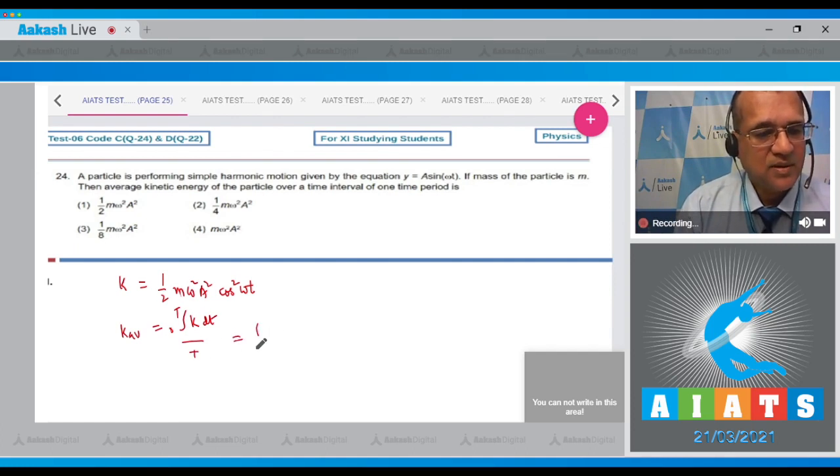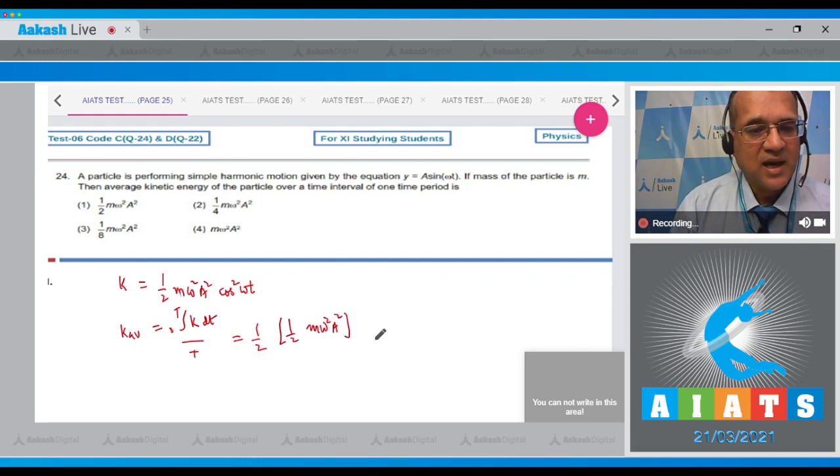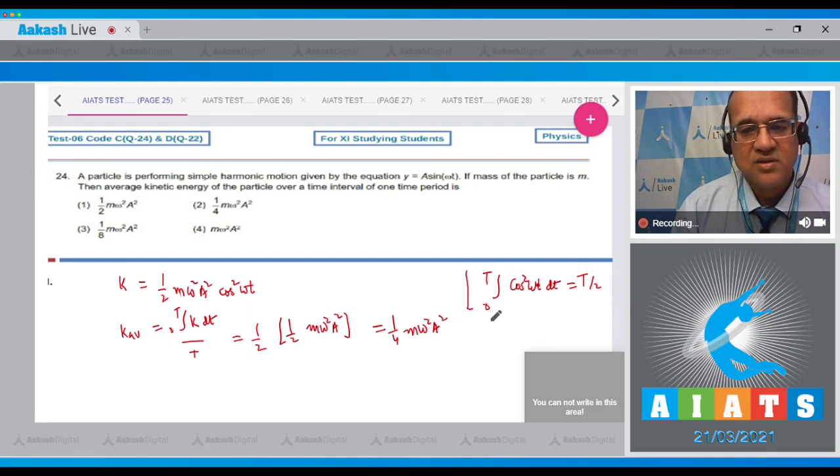When you solve, half of half of this value will come - this is half of half of m omega squared a squared - and that becomes equal to 1/4 m omega squared a squared. Remember, cos squared omega t integration from 0 to t is equal to t by 2. So note down that integral of cos squared omega t dt from 0 to t is equal to t by 2. So this would be used to solve this equation. Therefore the correct option is option number 2.